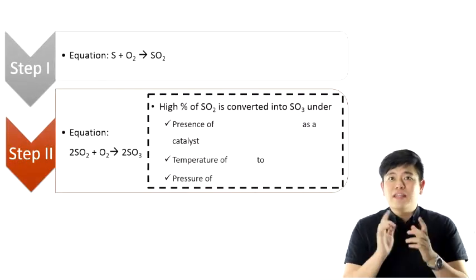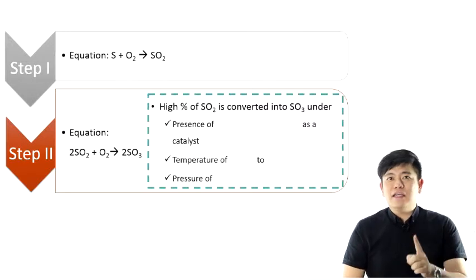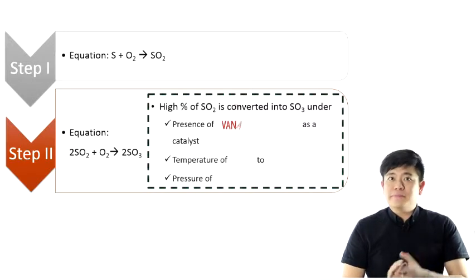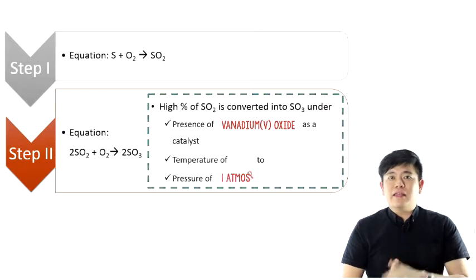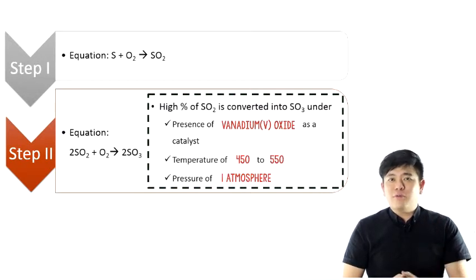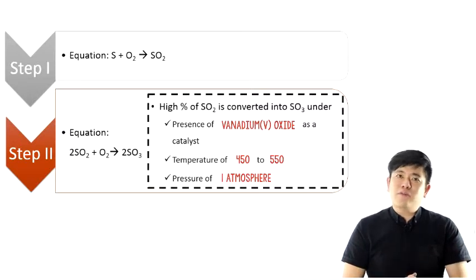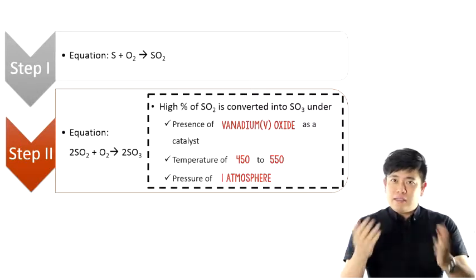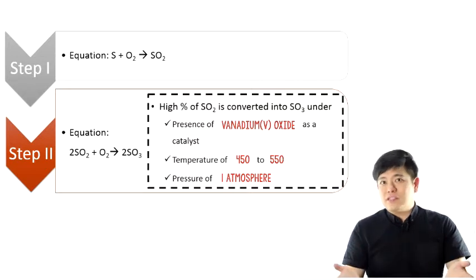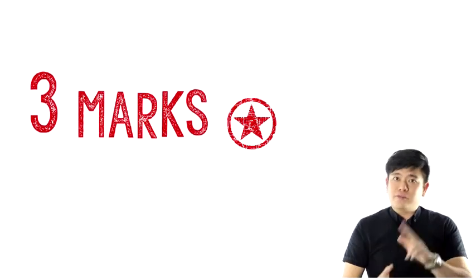So the catalyst is, remember, Vanadium 5 oxide, V2O5. Pressure, 1 atm, and the temperature, 450 degrees C to 550 degrees C. In the exam, you can just write 450 degrees C. So they also ask you to state three conditions in the exam. You write these three.